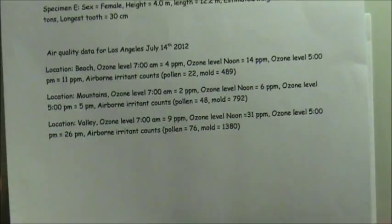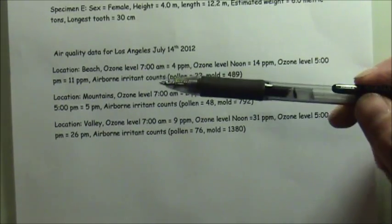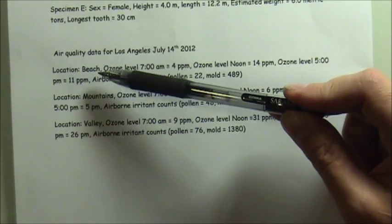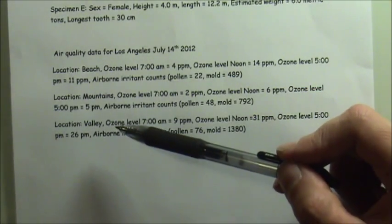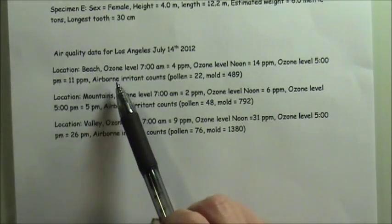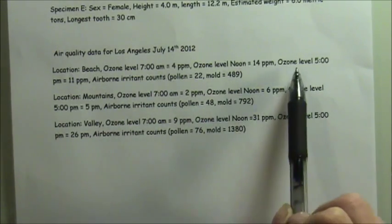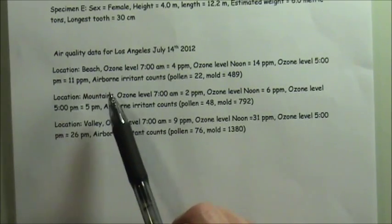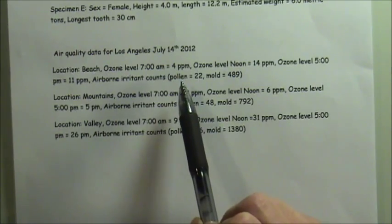Let's take a look at this set of data for air quality in Los Angeles. The data quality is given to us for three locations: the beach, the mountains, and the valley. And at each of the locations, we're given several pieces of information. One is the ozone level at 7 a.m., the ozone level at noon, and the ozone level at 5 p.m. So at three times during the course of the day, we have information on what the ozone level was like.